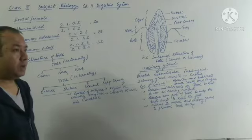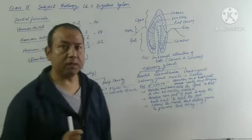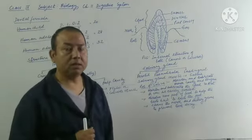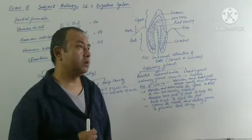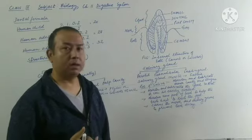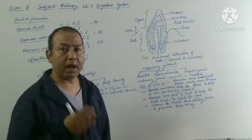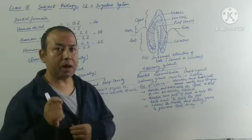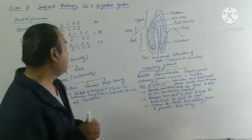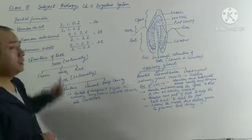The dental formula is usually written by counting the number of incisors, canines, premolars, and molars in half of the lower and upper jaw. You need to remember: it is always half.